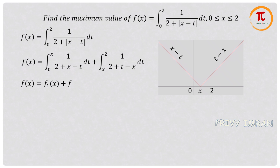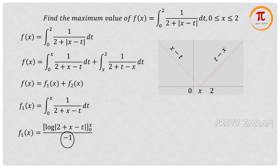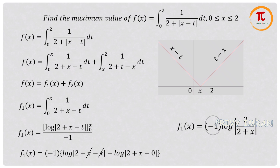Let me consider two functions. The first function is ∫₀ˣ 1/(2 + x - t) dt. Applying the integration and then the upper limit minus lower limit, in the first term the +x and -x cancel. Using log a minus log b equals log(a/b), and multiplying through by -1, the first function simplifies to log|(2 + x)/2|.